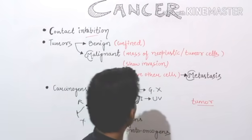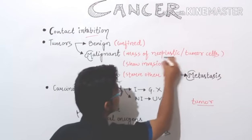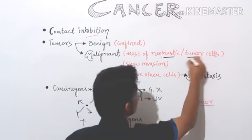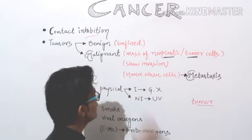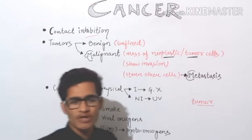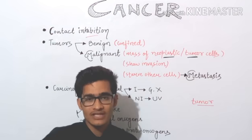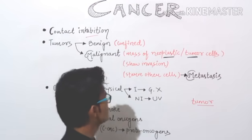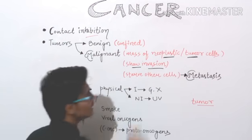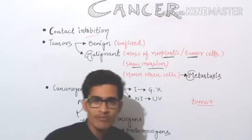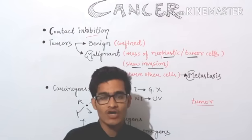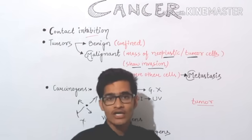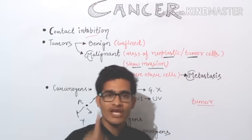Now, in the case of malignant tumor, it is a mass of neoplastic cells. Neoplastic cells are also known as cancerous cells or tumor cells. The tumor cells are aggregated to form a malignant tumor. This particular tumor shows invasion — it gets invaded into different kinds of organs. It has a tendency to spread into different organs, and it starts dividing wherever it goes.